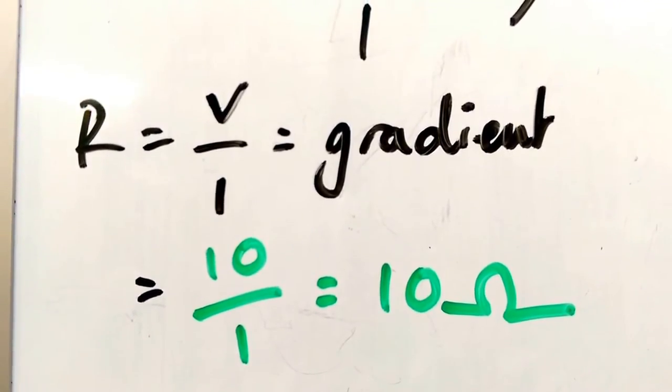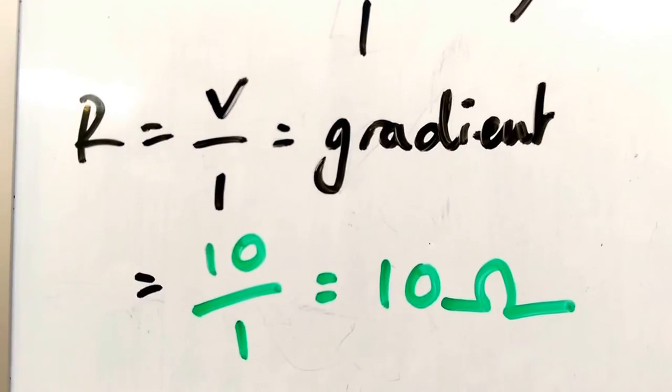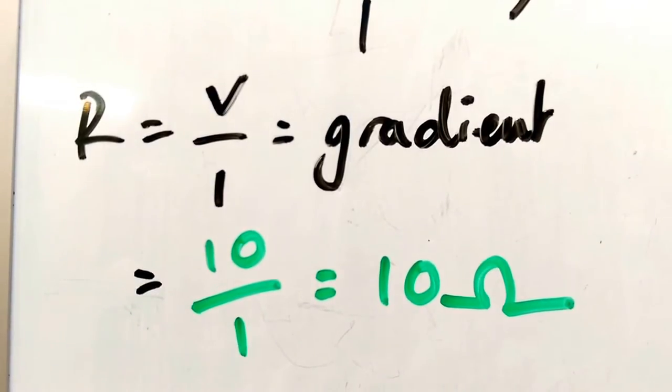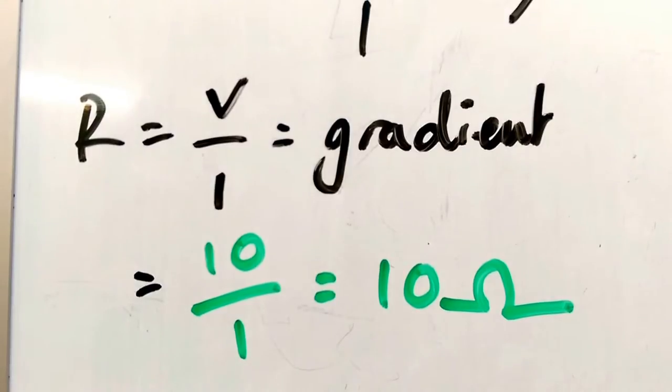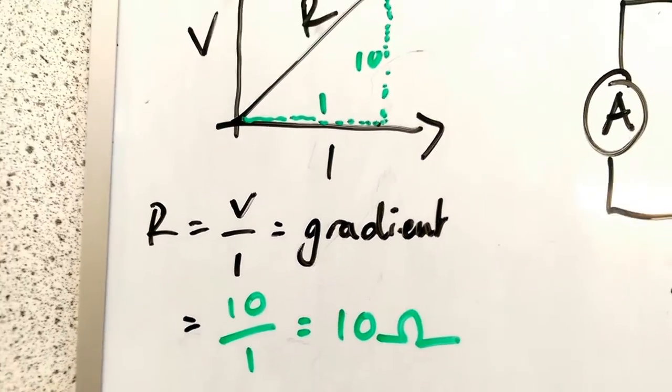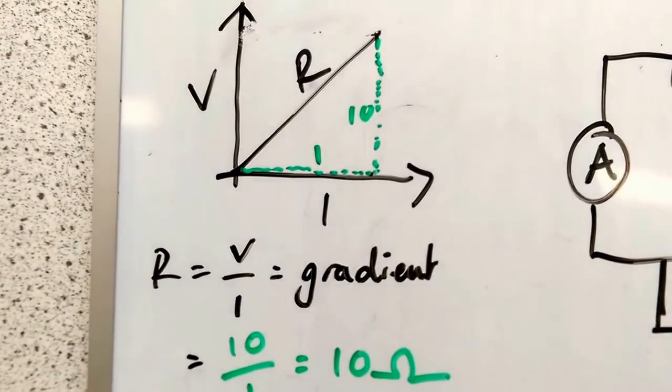So in that case, V over I, V divided by I is the resistance. 10 divided by 1 is 10, and it's 10 ohms, which is the unit of resistance.